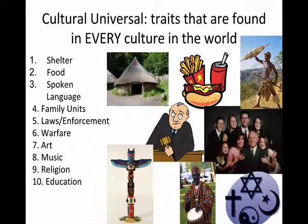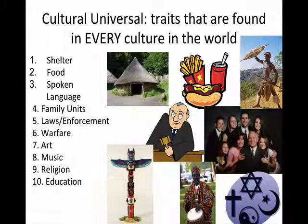Now we're going to look at what makes a culture different, and also what similarities cultures have. The first definition we're going to take today is cultural universal. Please write this down, as well as the ten things listed underneath it. The word universal means everywhere — it's something found everywhere amongst humans on this planet. It's a trait or characteristic found in every single culture throughout the history of the entire world.